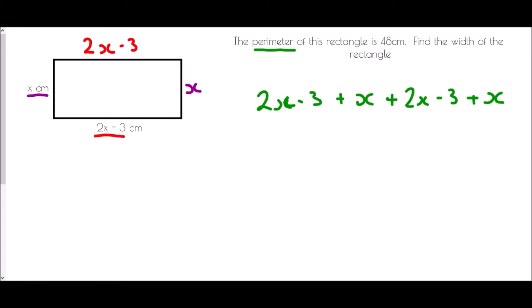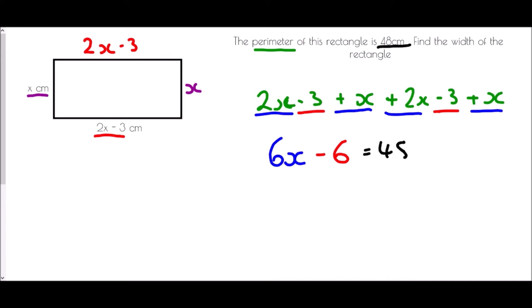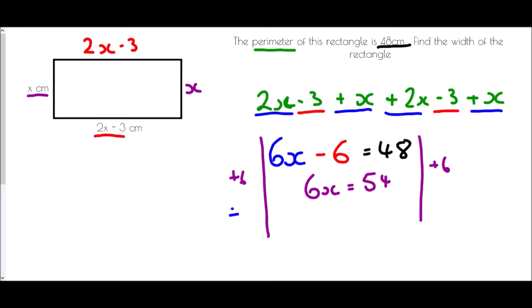Simplifying: 2x + x + 2x + x = 6x, and −3 − 3 = −6, so the expression is 6x − 6. We're told this equals 48, giving the equation 6x − 6 = 48. Adding 6 to both sides: 6x = 54.